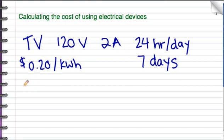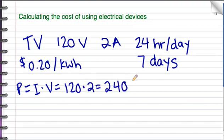Okay, first thing is you have to figure out the power. So power is current times voltage, 120 times 2 is 240 watts. If you divide by 1,000, you get .24 kilowatts.